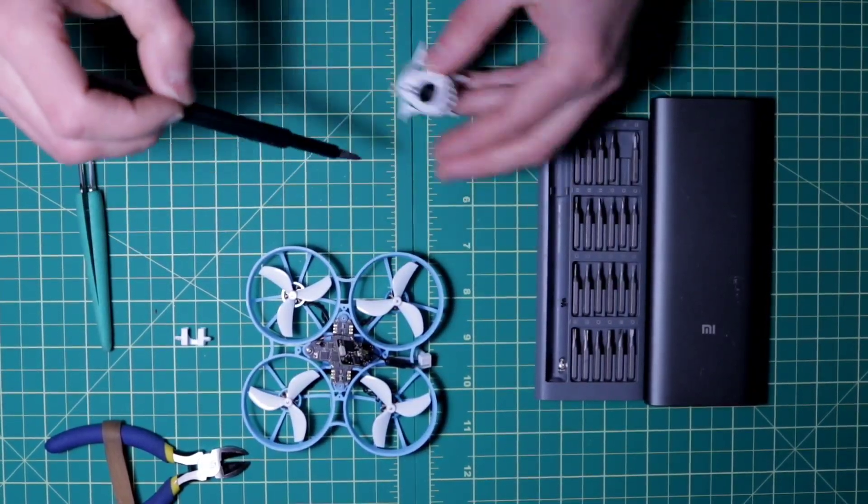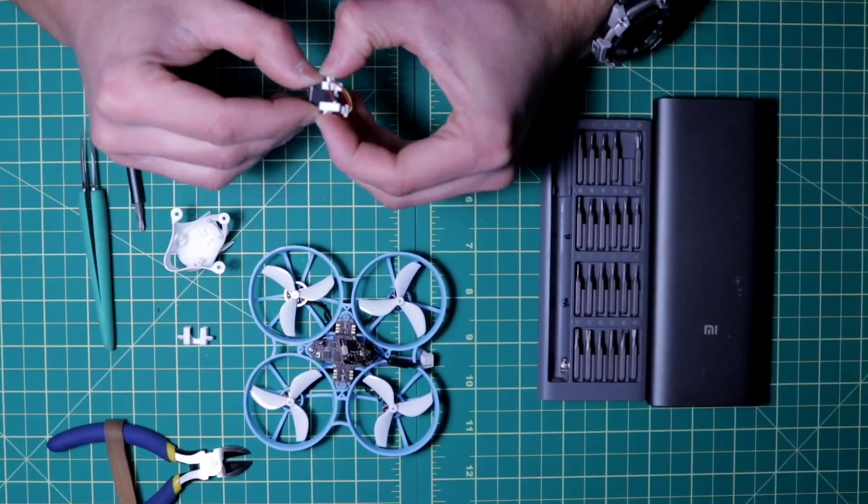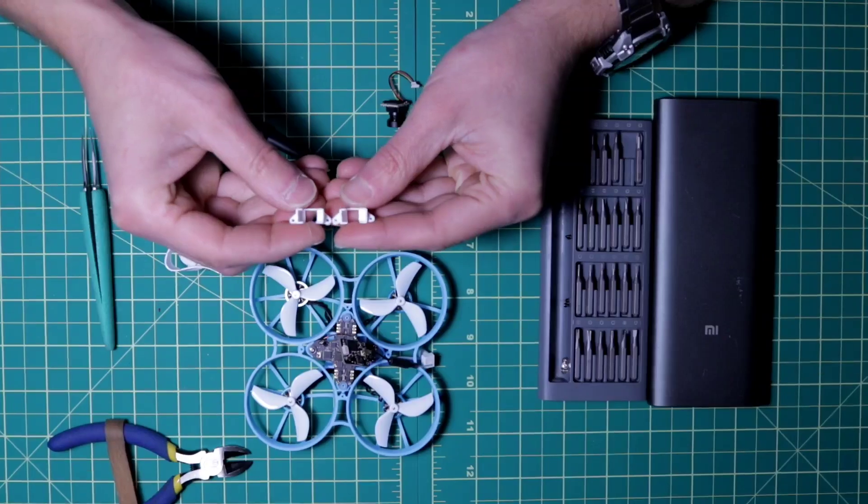Loosen last two screws to take out the camera from canopy. Wires of camera should be inside from the bottom. Take out the camera. Now you can change the mount. As you can see the ears of the mount has different angle.